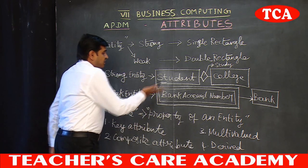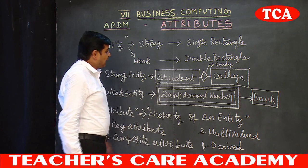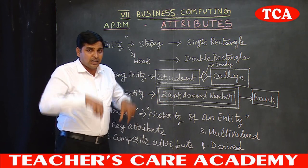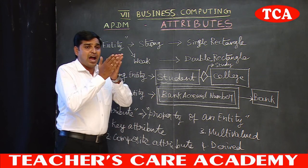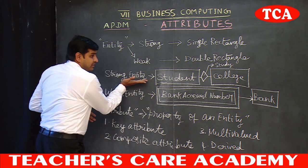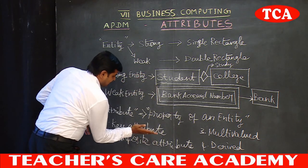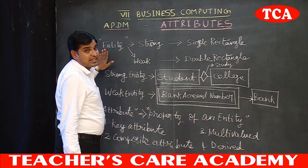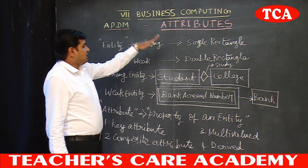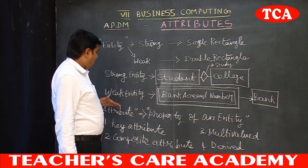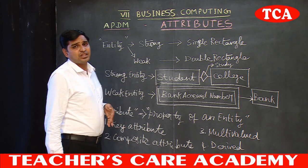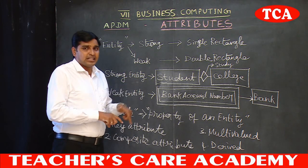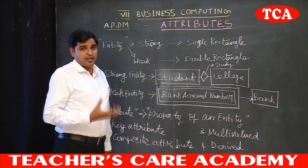Attributes are also known as characteristics of an entity. In the student entity, I maintain a relationship with an identity. The identity has a characteristic attribute. Attributes are part of an entity. Entity, relationship, and attributes together form a part of the entity relationship diagram. In the entity relationship diagram, attributes are very important.